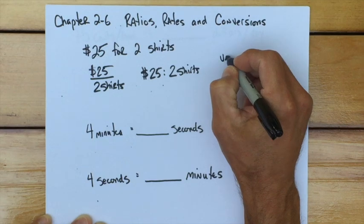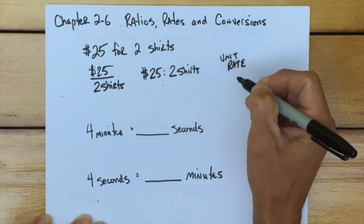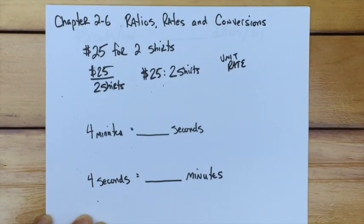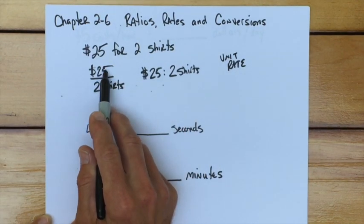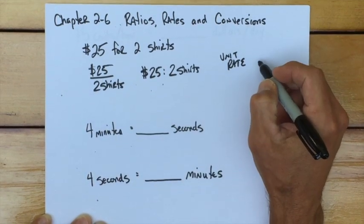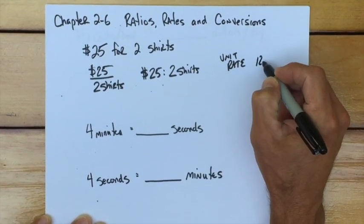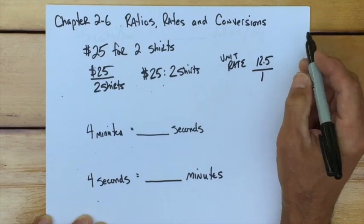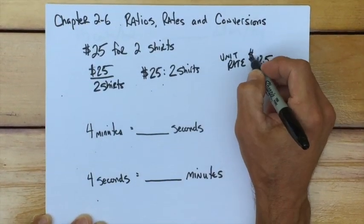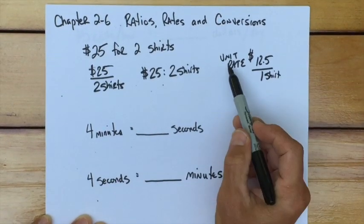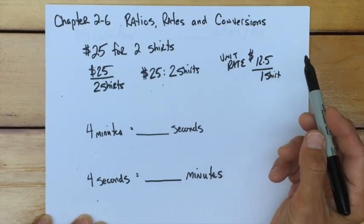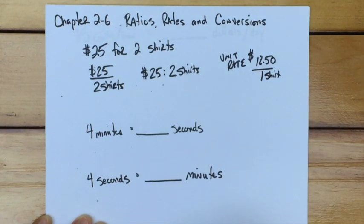You can also turn this into a unit rate if you want, and a unit rate is simply a ratio, just like I have here, but with a denominator of one. So, for example, if I have $25 over two, I could divide $25 by two and get $12.50 over one, and then I'll add my units back in. That would be dollars. This would be shirts, or shirt. So, the unit rate would be $12.50 per one shirt. And this is a pretty useful thing. You'll see that in the grocery stores and gas stations and so on.